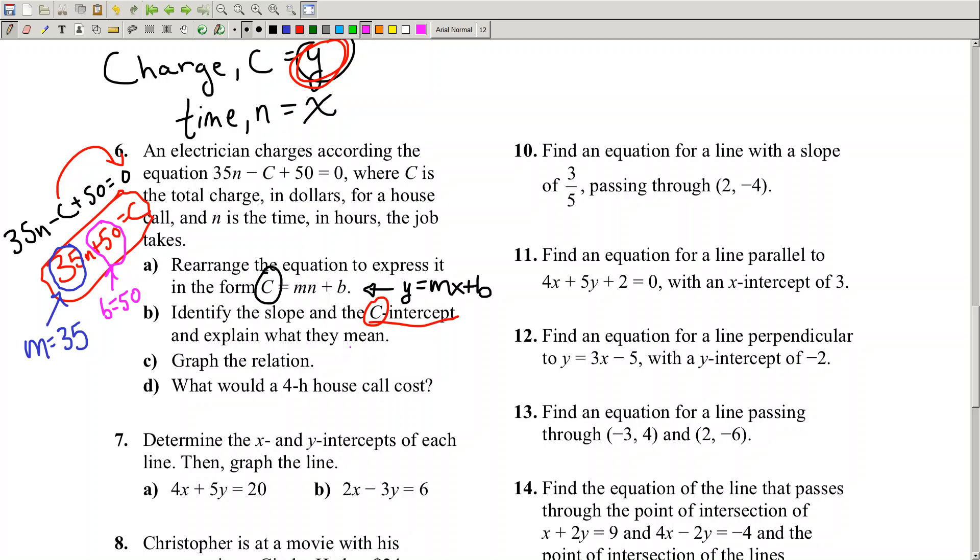So, explain what they mean. Remember, slope is a number per a certain unit of time or per a certain unit of measurement. So the slope is 35 per hour in this case because you have number of hours worked. So what are we dealing with here? We're dealing with charge, which is in dollars. So it is $35 per hour. So it's a charge per hour that the electrician is charging.